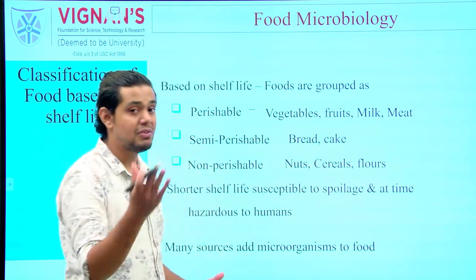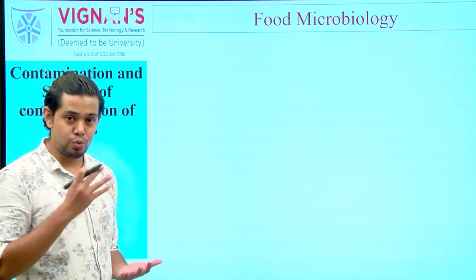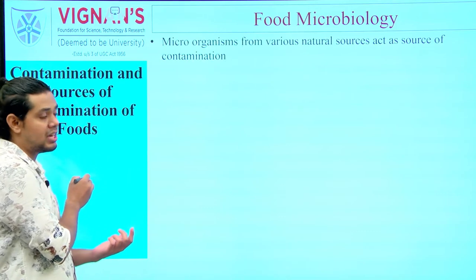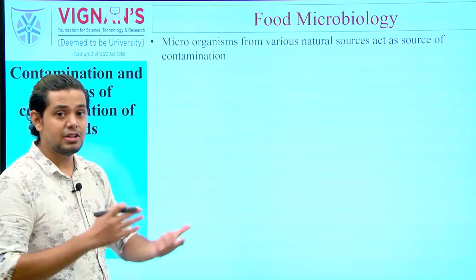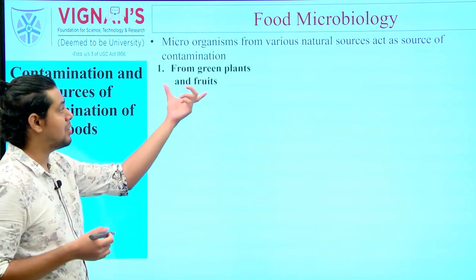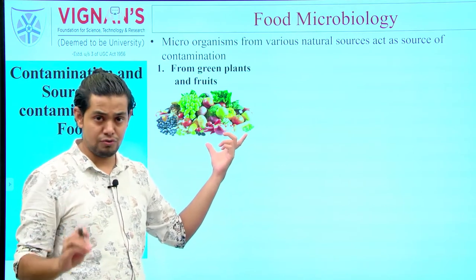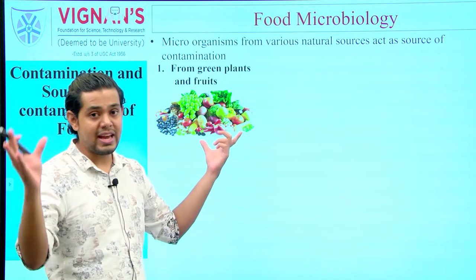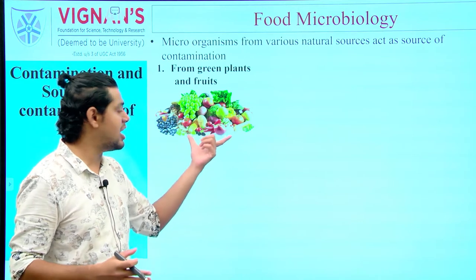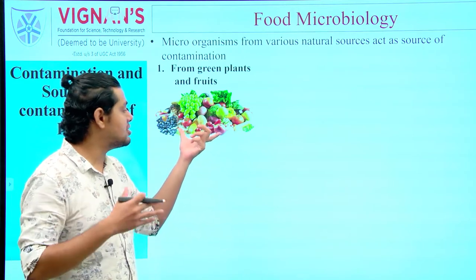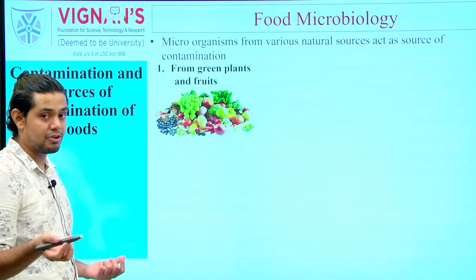To understand how microorganisms enter food products and cause spoilage, we need to understand the different sources of contamination. There are various natural sources which can render food products contaminated. The first is from green plants and fruits. Fruits, vegetables, or green leafy vegetables may have a natural microflora dependent on the environment in which they are grown, making them potential carriers of microorganisms.